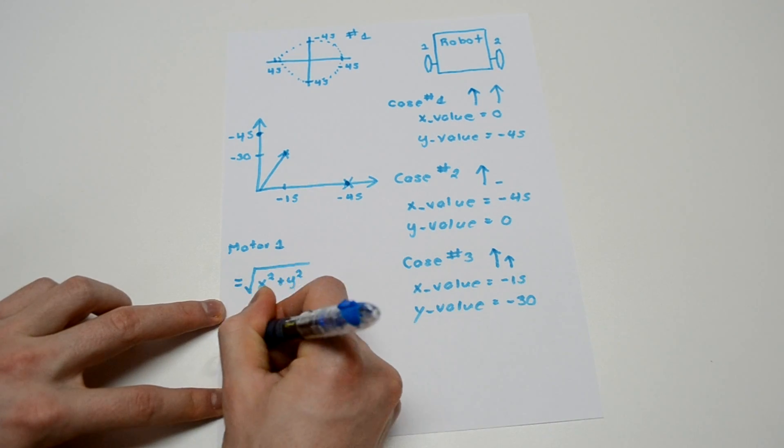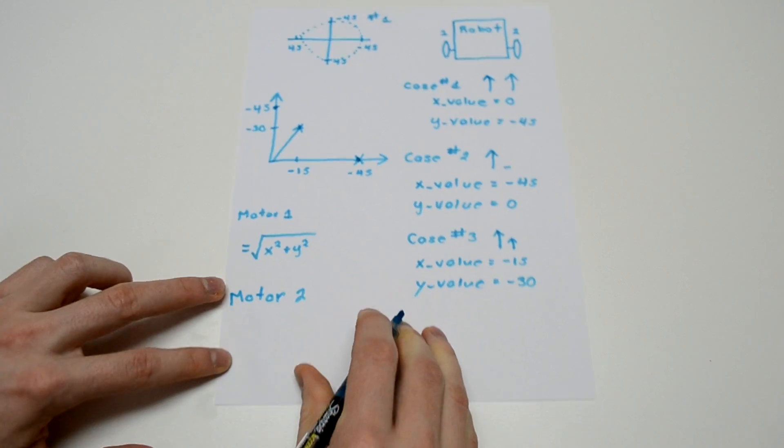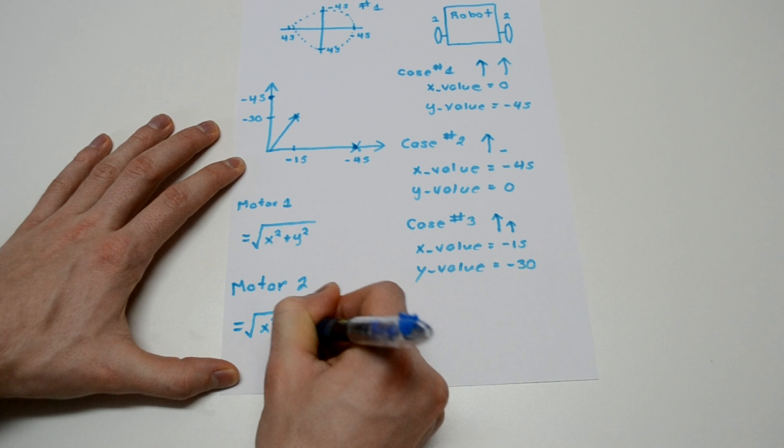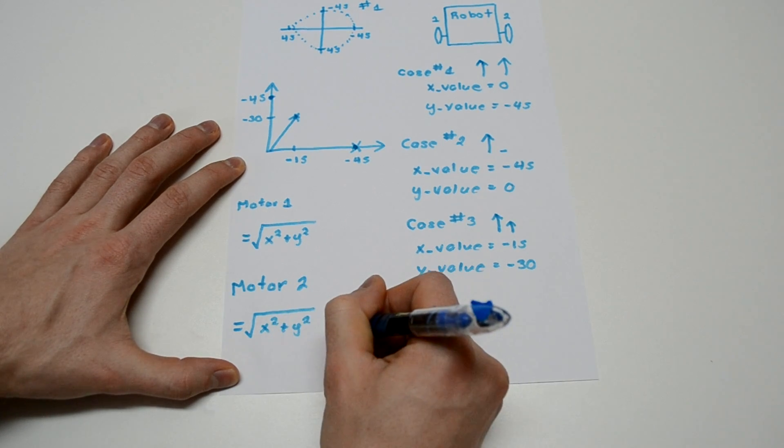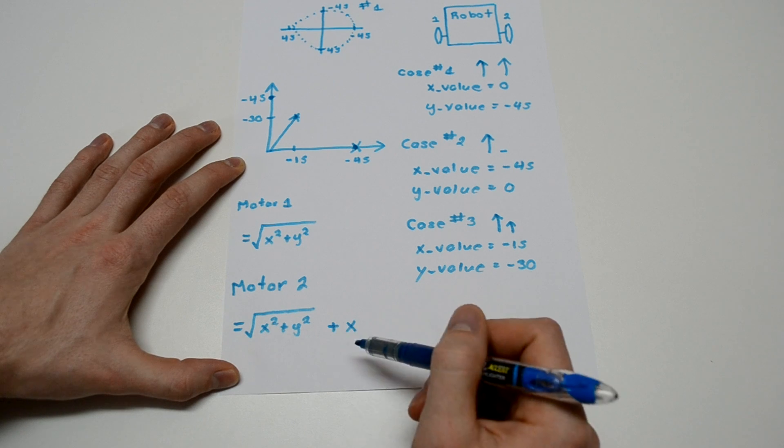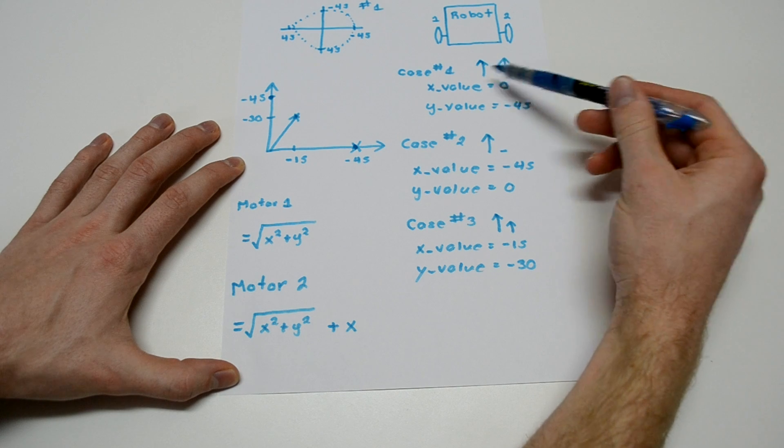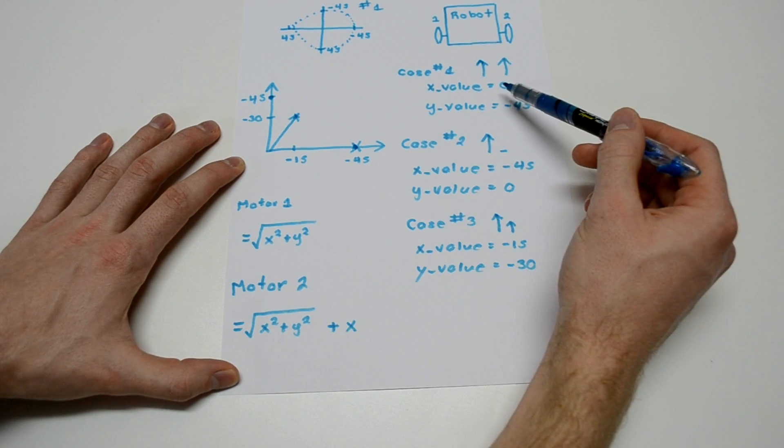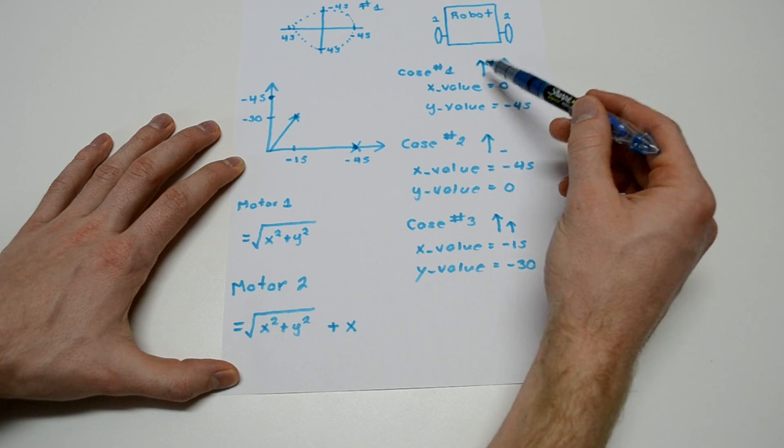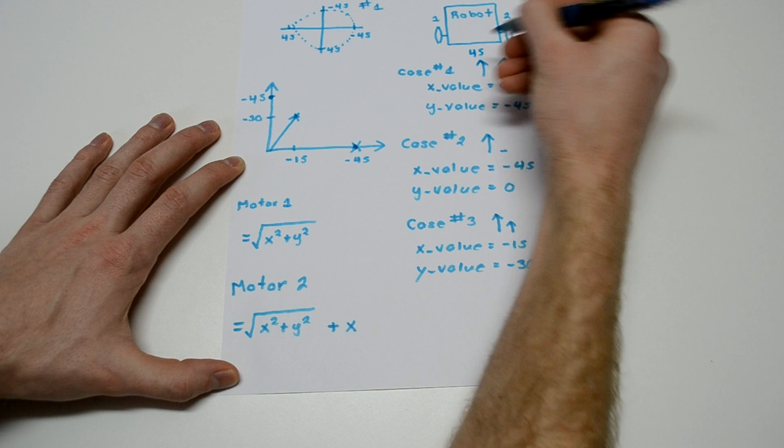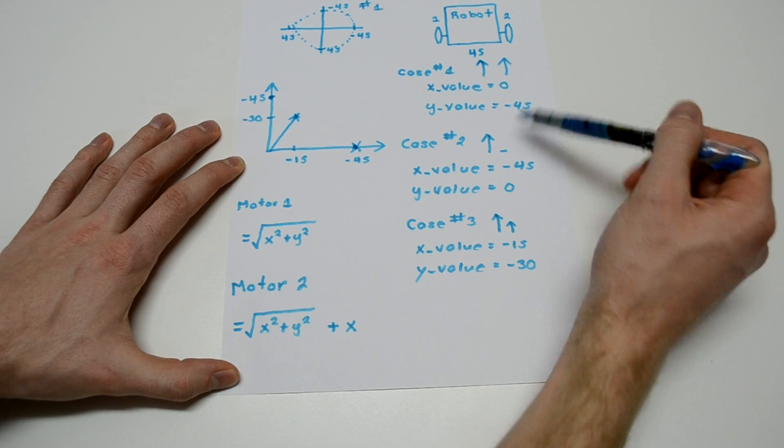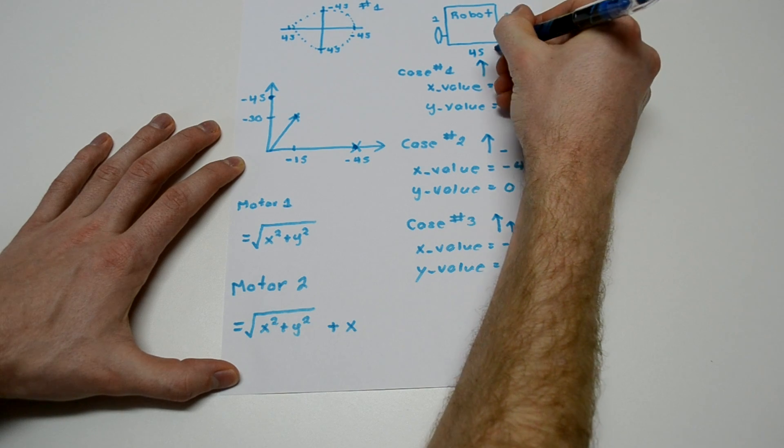Now, let's look at motor 2. Motor 2. So, motor 2, the speed is going to equal the square root again of x squared plus y squared. Except this time, we're going to have a plus x term out here. And why do we have this plus x term out here? Well, let's look at these examples. Let's see if it satisfies our three cases. So, case number 1. We want both motors to be going at full speed. So, we have, for motor 1, we have 0 squared plus negative 45, or 45 squared. Square root of that. That's going to equal 45. So, motor 1 will equal 45 in our case here. 45. And then we'll look at motor number 2, which we also want to be going at the same speed. So, we'll have x squared plus y squared, which equals 45, plus 0. So, that's going to equal 45. Okay. So, that satisfies that condition.